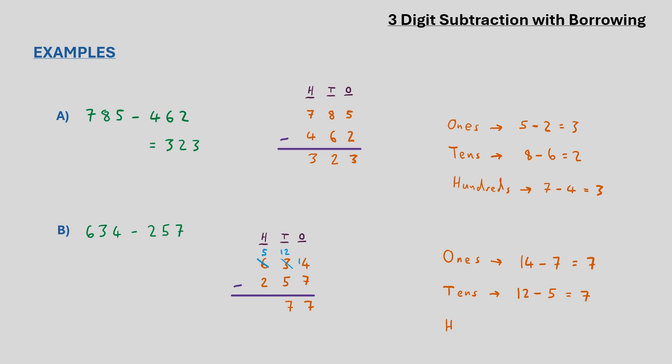We then carry out a subtraction of what is left in the hundreds column which is 5 minus 2 which gives us 3. And the final answer to the sum of 377 with the help of borrowing digits when it was required.